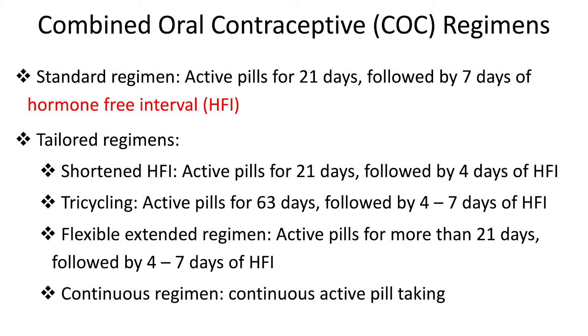Question three: what are the different ways of taking the combined oral contraceptive pill? There is the standard way and the tailored way. The standard use is taking active pills for 21 days and then having a seven-day hormone-free period, often referred to as HFI — hormone-free interval.